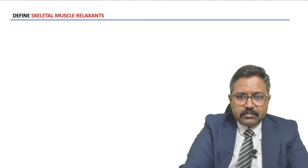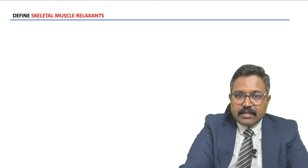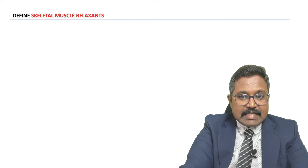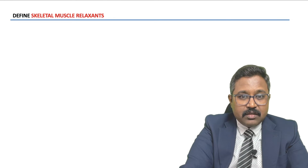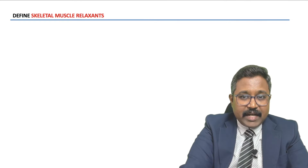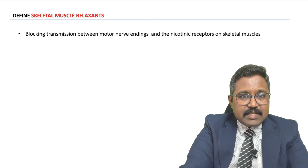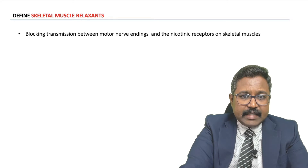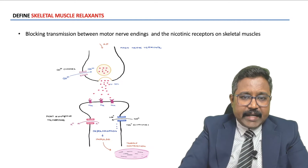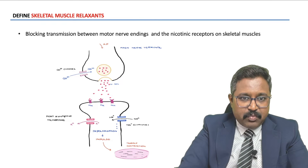Moving on to the definition of skeletal muscle relaxants. As the term says, these are the agents that will cause relaxation of muscles which are attached to the skeletal system. In simple words, these are drugs which inhibit muscle contraction and lead to muscle relaxation. They mainly block the transmission of nerve impulses between the motor nerve ending and the nicotinic receptor present on the skeletal muscle.